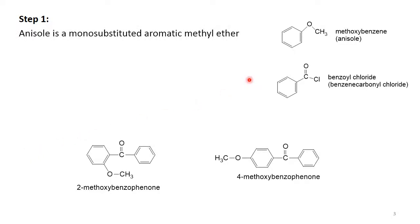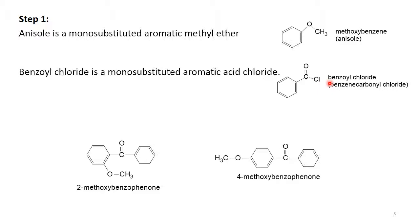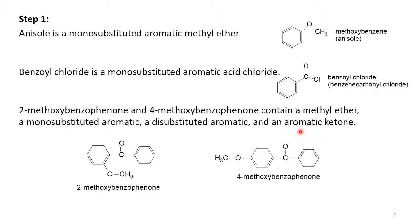Step one: let's identify the functional groups in our compounds. Anisole is methoxybenzene — it has a monosubstituted aromatic ring and a methyl ether group. Benzoyl chloride contains a monosubstituted aromatic ring and an aromatic acid chloride. 2-methoxybenzophenone and 4-methoxybenzophenone contain a methyl ether, a monosubstituted aromatic ring, a disubstituted aromatic ring, and an aromatic ketone.